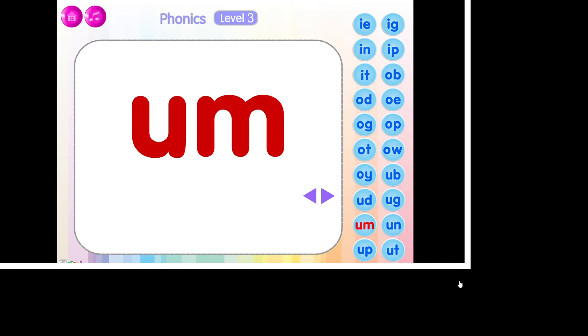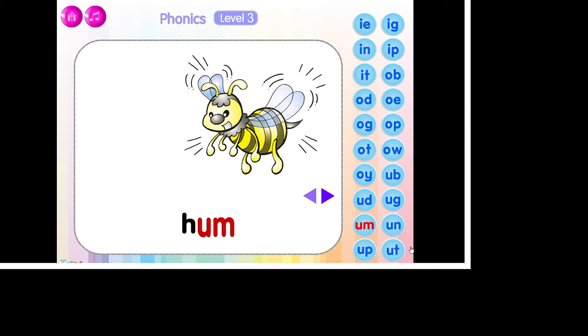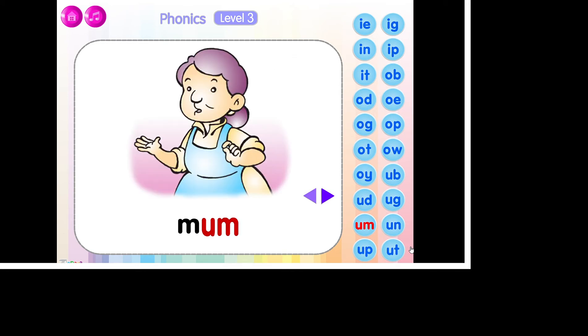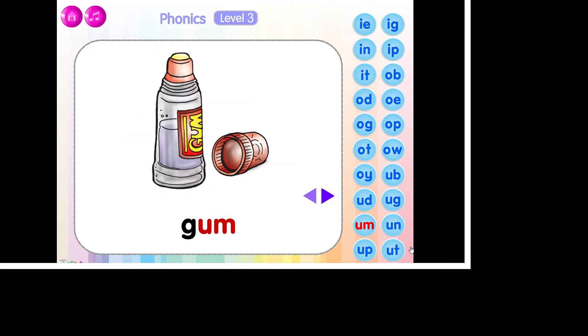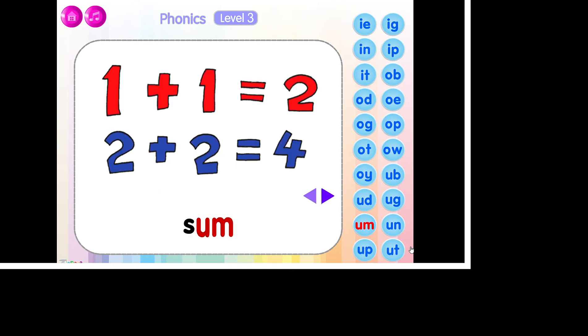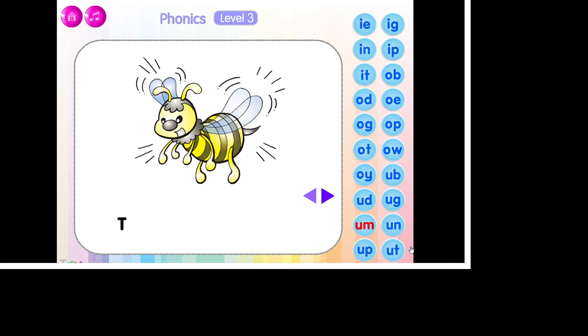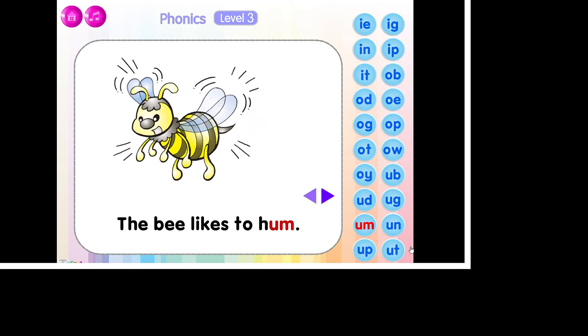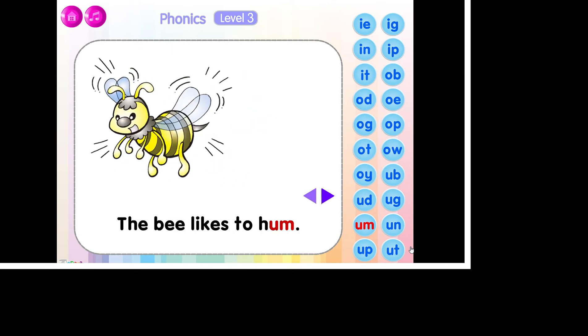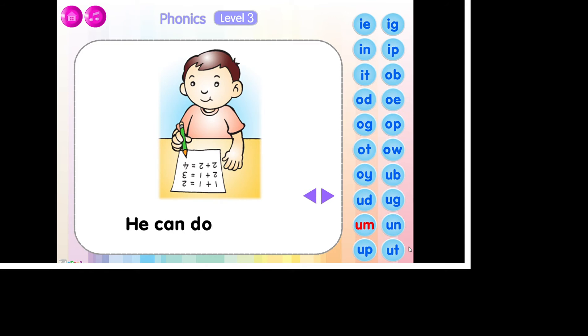The sound of um is um. H-U-M, hum. M-U-M, mum. G-U-M, gum. S-U-M, sum. The bee likes to hum. He can do the sum.